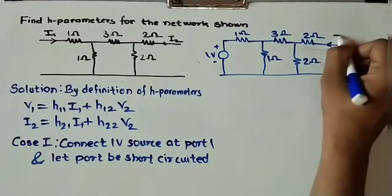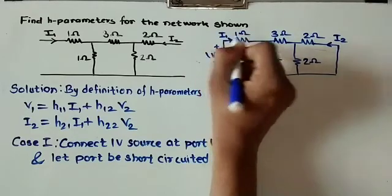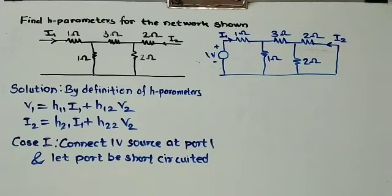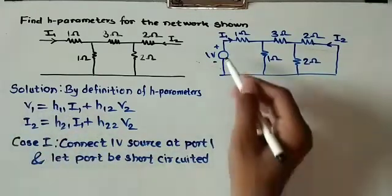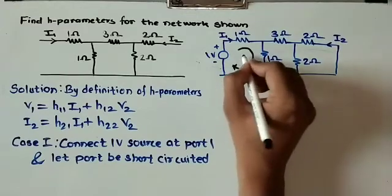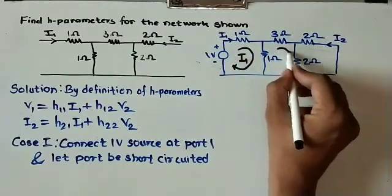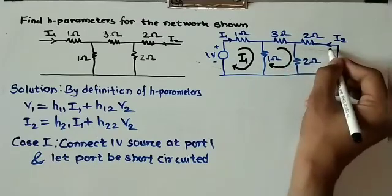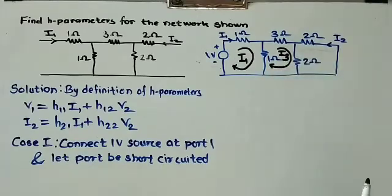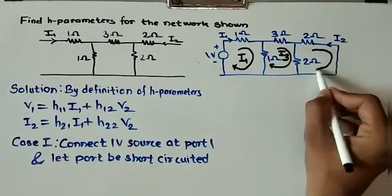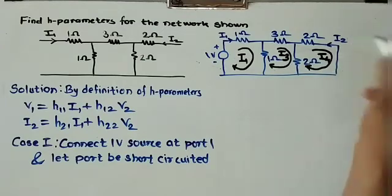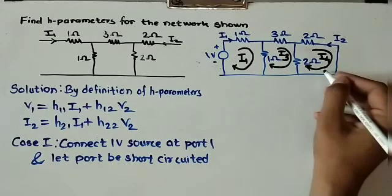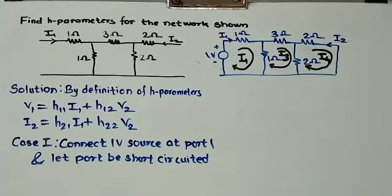With the diagram updated showing i1 and i2, we apply mesh analysis to find the currents. Let the mesh current in loop 1 be i1, in loop 2 be i3 (not i2, since i2 is already defined), and in loop 3 be i4 flowing clockwise. Note that i4 equals minus i2, since their directions are opposite.